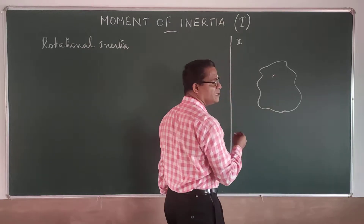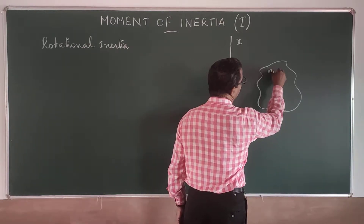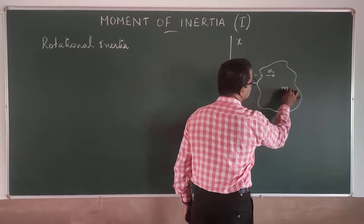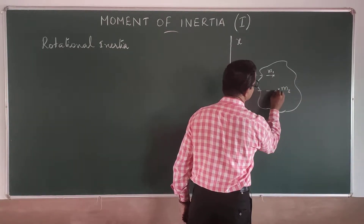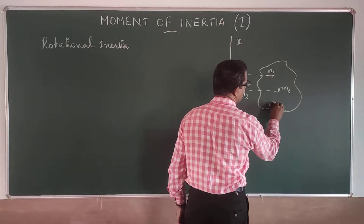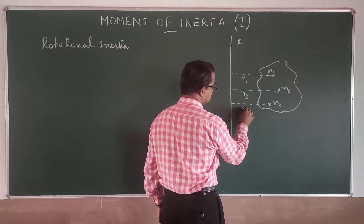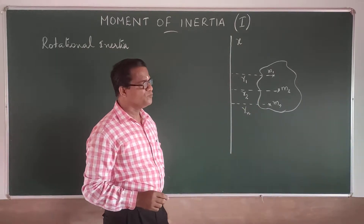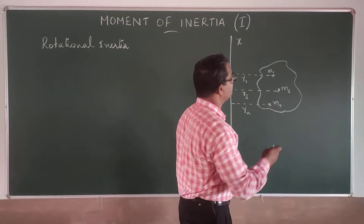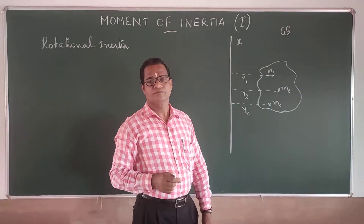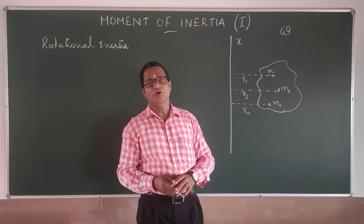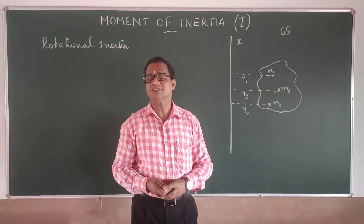We can consider mass particles: m₁ at a perpendicular distance r₁ from the axis, m₂ at a perpendicular distance r₂, and so on up to mₙ at a perpendicular distance rₙ from the axis of rotation. As the body rotates with a definite angular velocity omega, omega remains constant for all mass particles because the body is a rigid body.